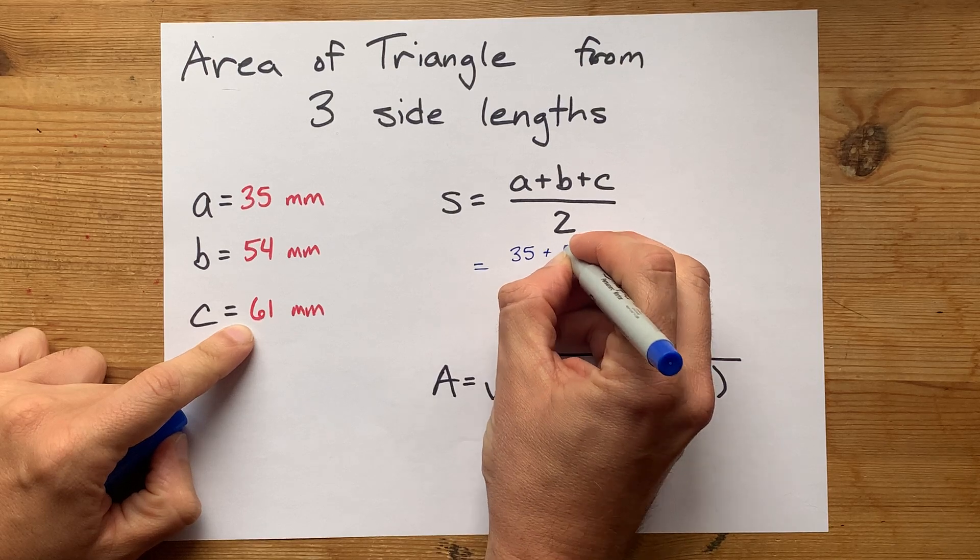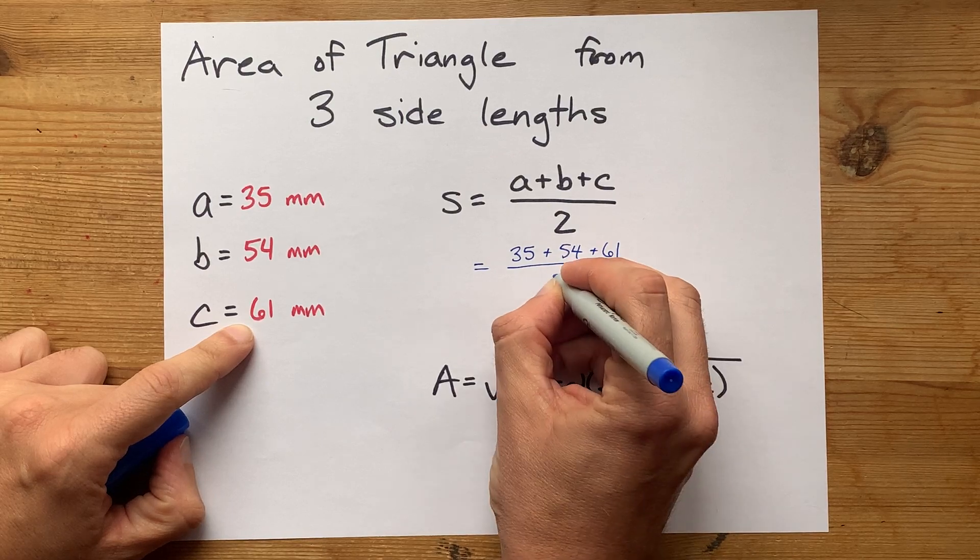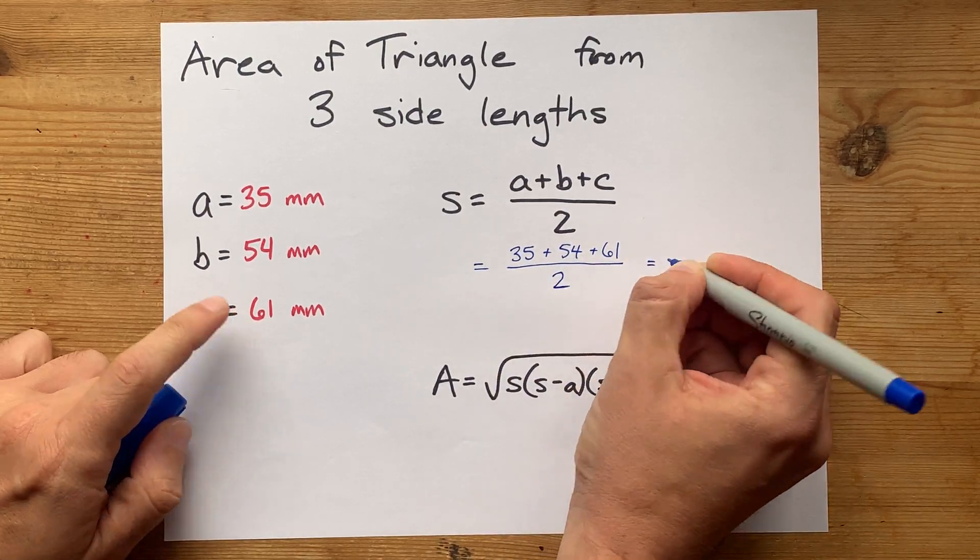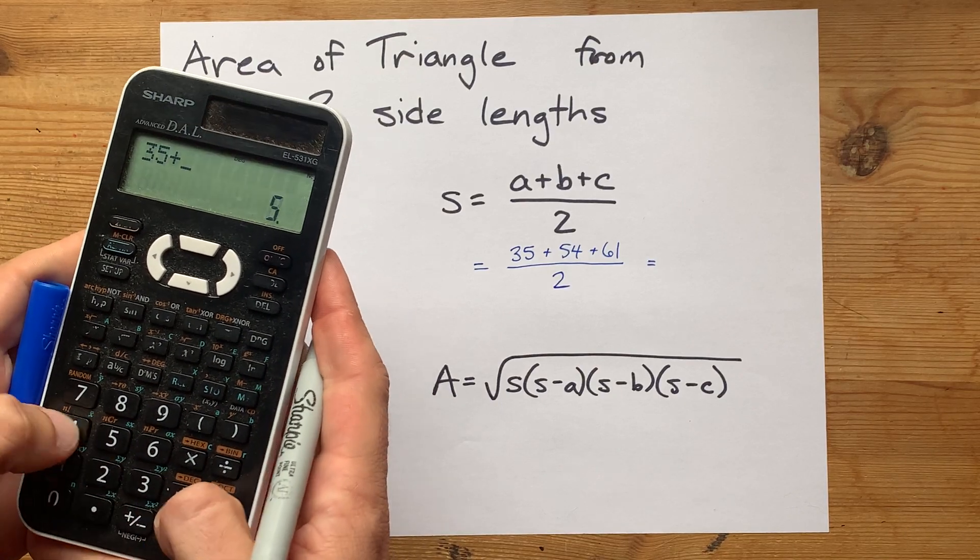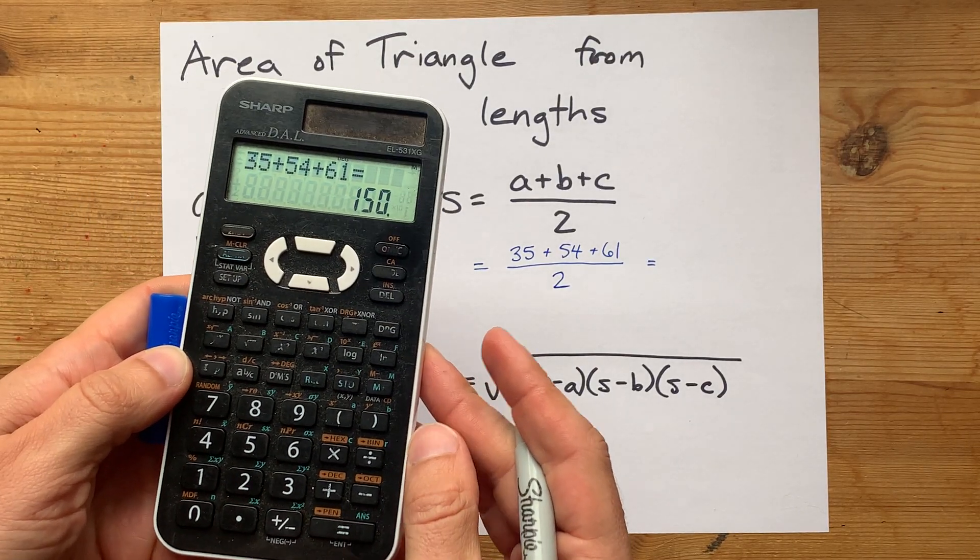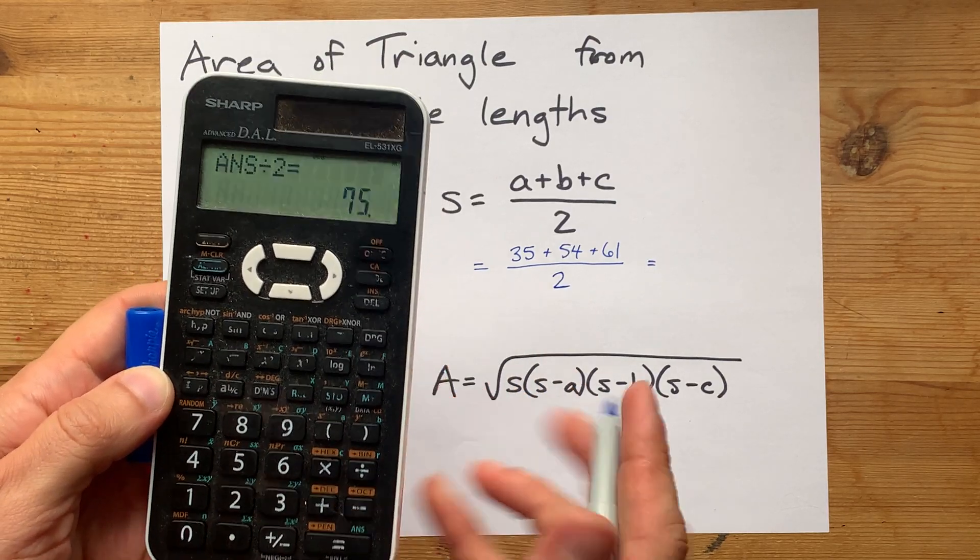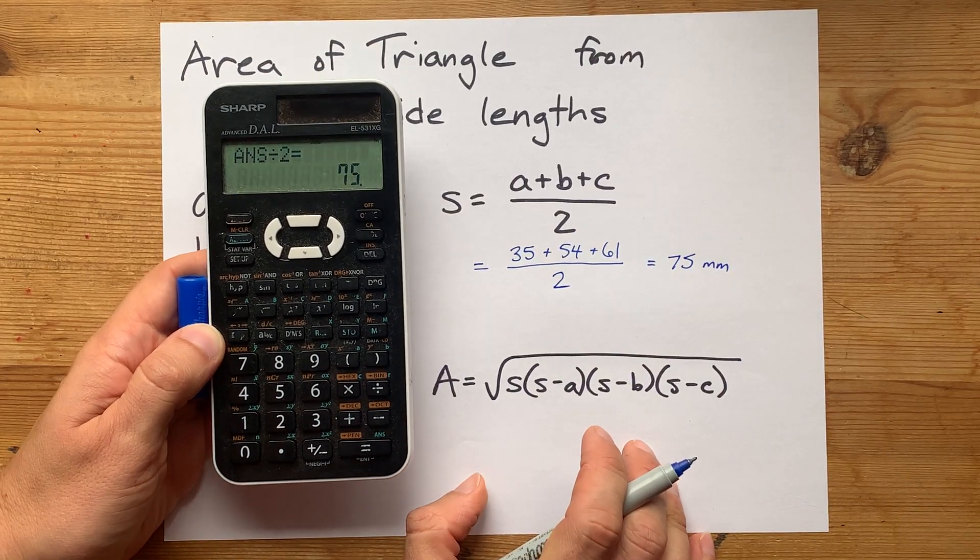It's 35mm plus 54mm plus 61mm, and then we're going to divide by 2. I'm going to use a calculator to do all this. 35 plus 54 plus 61 gives me 150. Then when I divide by 2, I get 75. So the semi-perimeter here is 75mm.